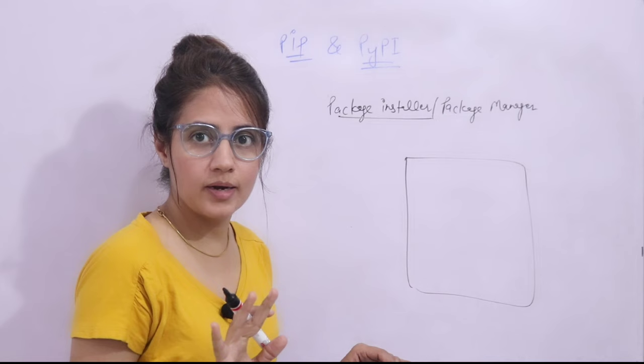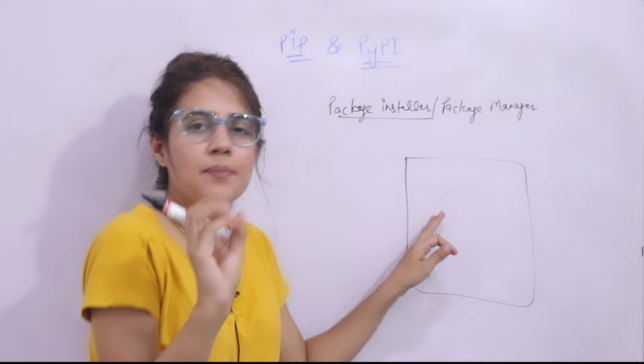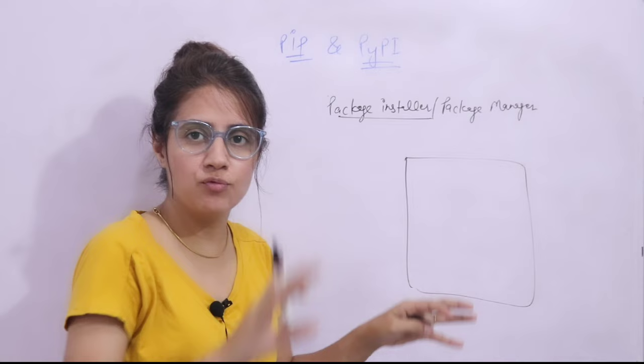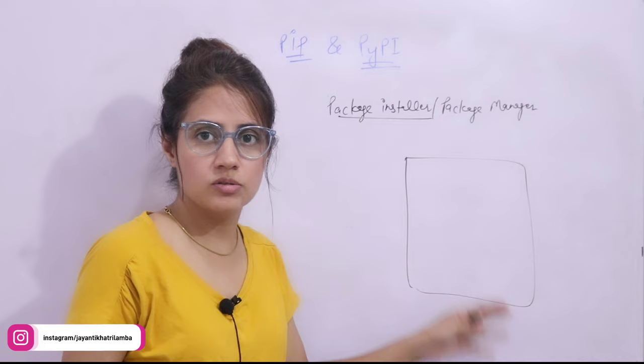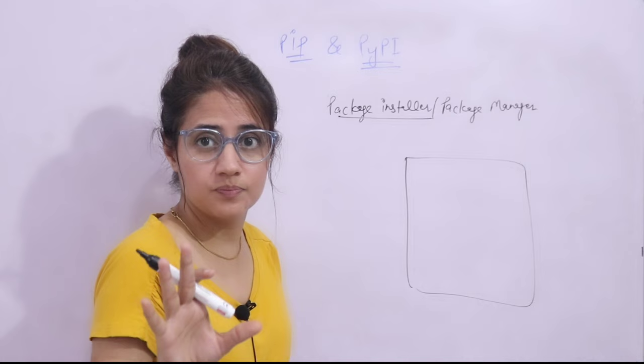If you have limited stuff, then it's okay. Like if you have a small program, then it's okay — in one file you can write everything, any function you have or anything you have, you can write it down. But if you are working on a large project or developing a large application and you have thousands of lines of code, then obviously it's not a good idea to write everything in one file.